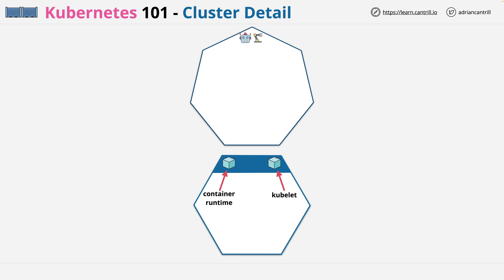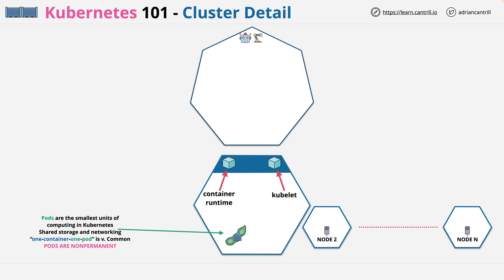The cluster will also likely have many more nodes — it's rare that you only have one node unless this is a testing environment. Pods are the smallest unit of computing within Kubernetes. You can have pods which have multiple containers and provide shared storage and networking for those pods, but it's very common to see a one-container, one-pod architecture, meaning each pod contains only one container. When you think about Kubernetes, don't think about containers — think about pods. You're going to be working with and managing pods. You would generally only run multiple containers in a pod when those containers are tightly coupled and rely on each other very closely.